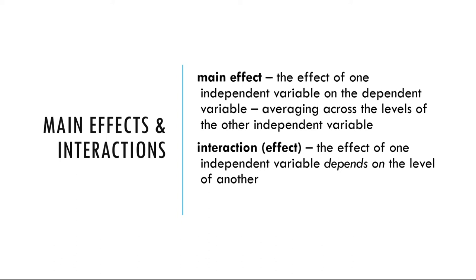Interactions. There's an interaction effect, or just an interaction, when the effect of one independent variable depends on the level of another. As an everyday example, assume your friend asks you to go to a movie. Your response is, 'Well, it depends on which movie you're going to see and who else is coming.' You really want to see the big blockbuster summer hit, but have little interest in seeing the cheesy romantic comedy. In other words, there's a main effect of type of movie on your decision. If your decision further depends on who she's bringing, then there's an interaction.